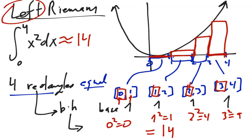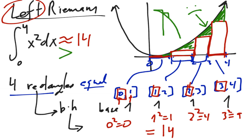Notice a few things. First, this is obviously an underestimation, because there are areas we did not count. The true area has to be bigger than 14, because we've left off those regions. A left Riemann sum is not always going to under-approximate — for example, if you had a decreasing function, the left-hand rectangles would actually over-approximate. So to figure out whether the rectangles are over or under-approximating, you have to look at the function.